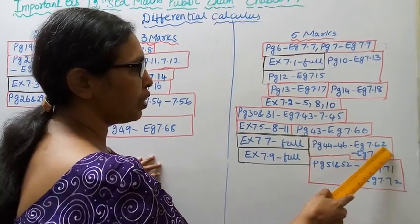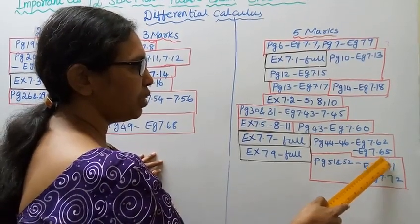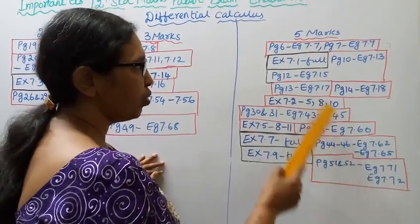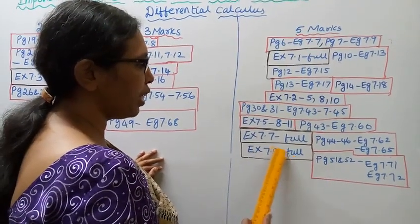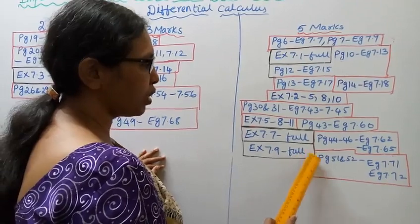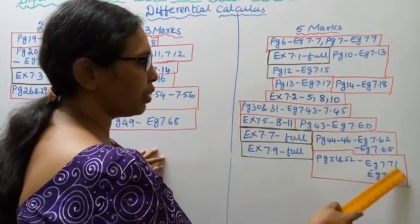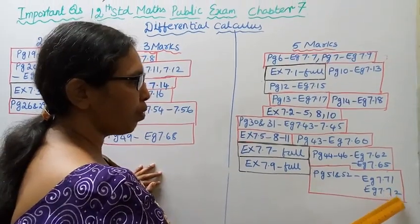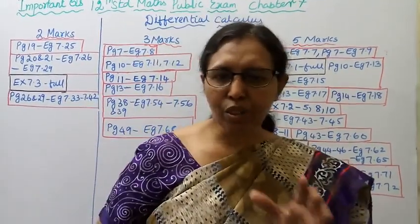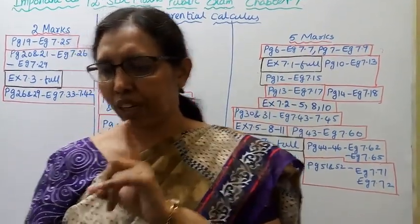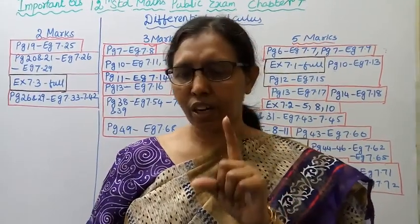Page 44: example 7.62, 7.63, 7.64, and example 7.65. Those sums in calculus carry a lot of 5 marks. Exercise 7.9 — practice all sums. Page 51-52: example 7.71, example 7.72. Practice all these sums. That is why you must study calculus — don't leave it out.